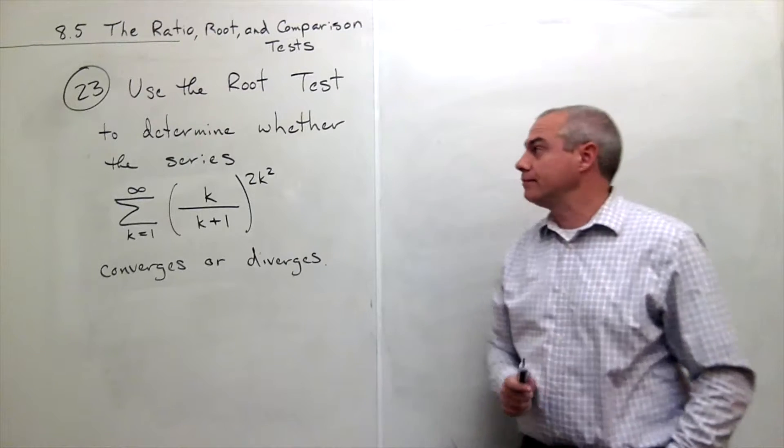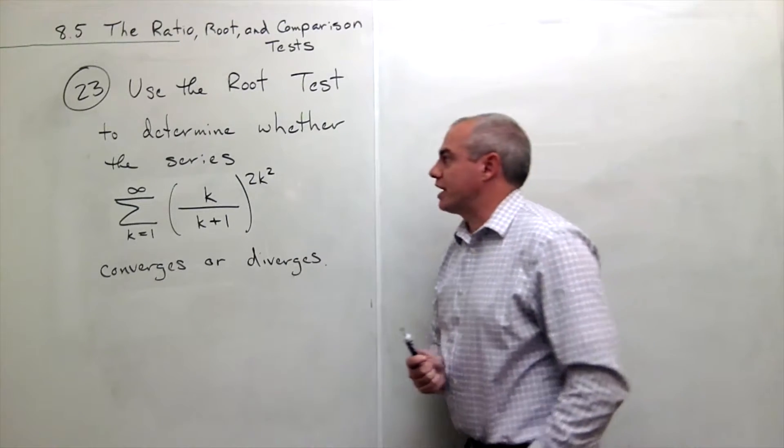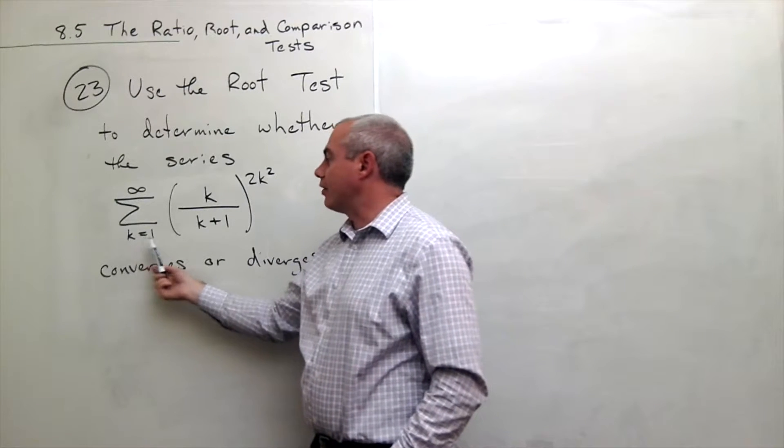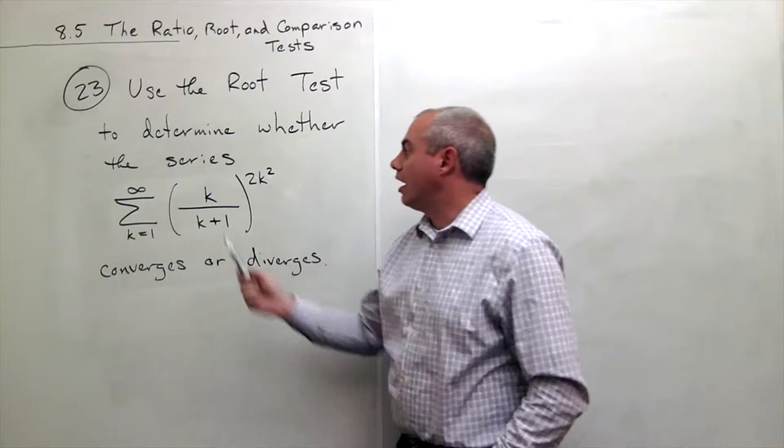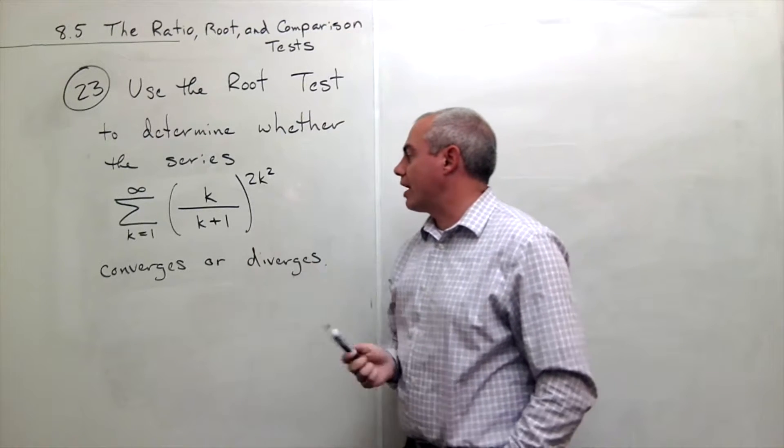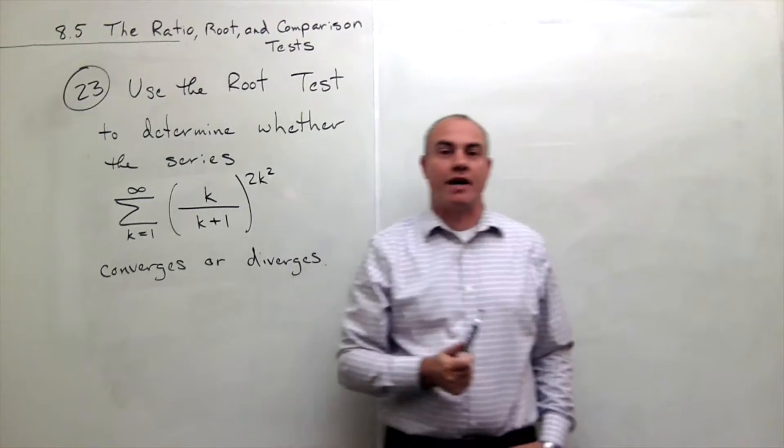In problem number 23, we'd like to use the root test to determine whether the series sum k going from 1 to infinity of k over k plus 1 to the 2k squared converges or diverges.